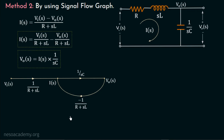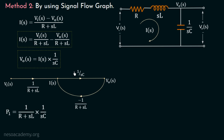Now that we have the signal flow graph, we can apply Mason's gain rule to find the overall transfer function. Firstly, we calculate the forward path gain, which is the product of the two branch gains: 1 over R plus SL multiplied with 1 over SC. Next, we calculate the loop gain. There is only one loop in this signal flow graph, and its gain is minus 1 over R plus SL, multiplied with 1 over SC.